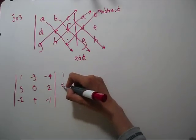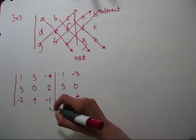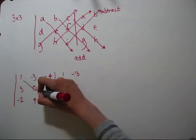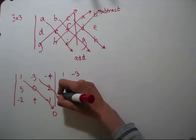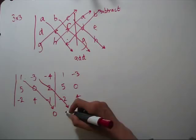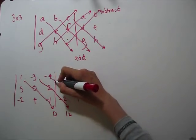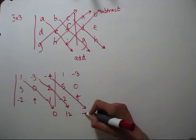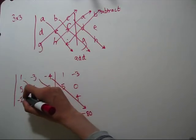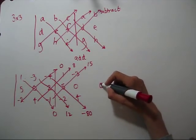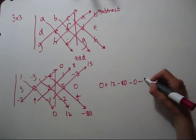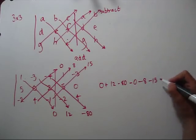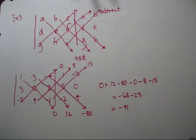First let's rewrite the first two columns. Now we'll take products. So we're going to have 1 times 0 times negative 1 is 0. Negative 3 times 2 times negative 2 is 12. And this one we'll get negative 80. Then going up, so we'll add the bottom ones, then minus 0, minus 8, minus 15. And we get negative 91.